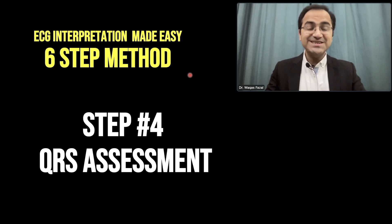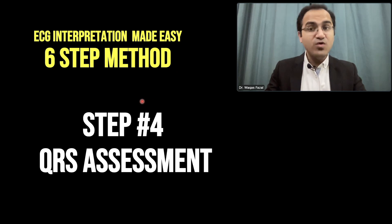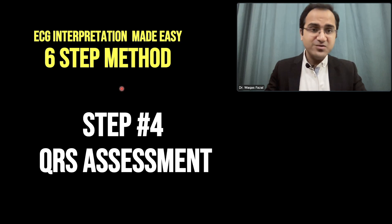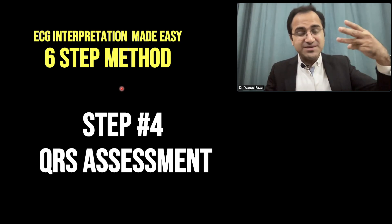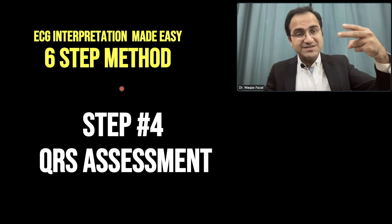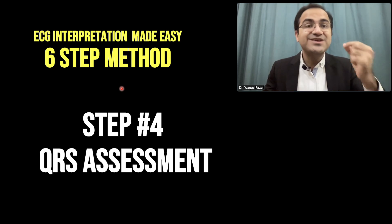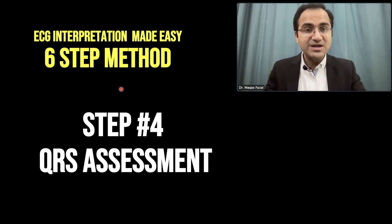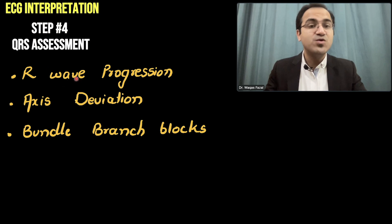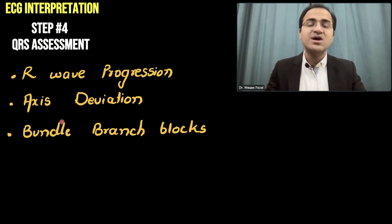In our video series of ECG interpretation made easy, in this video we are going to talk about step 4 of the 6-step method of ECG interpretation. In the previous video we talked about 3 steps: the general impression, the calibration assessment, and rhythm determination. In the fourth step you look at the QRS complex — R wave progression, axis deviation, and bundle branch and fascicular blocks.